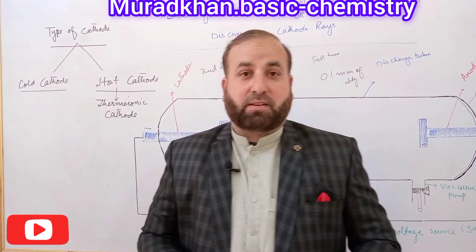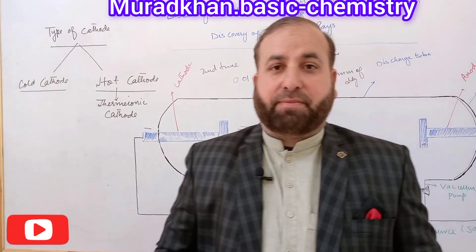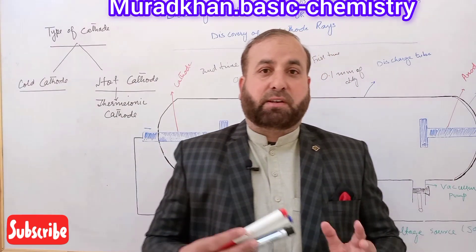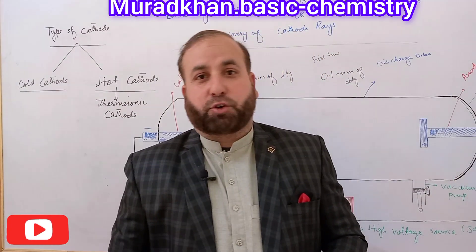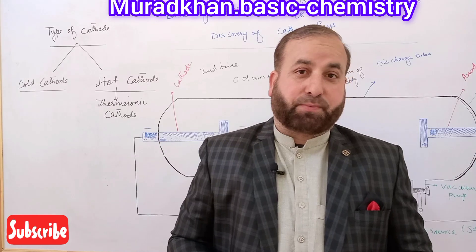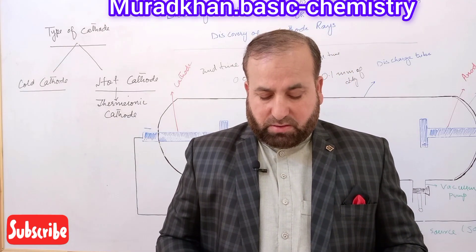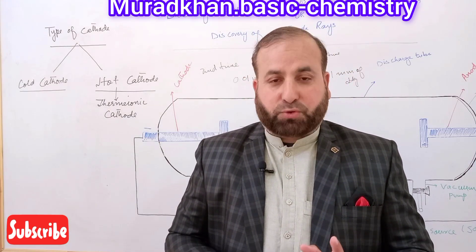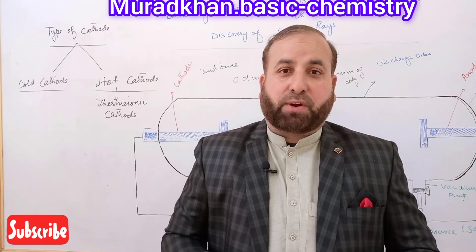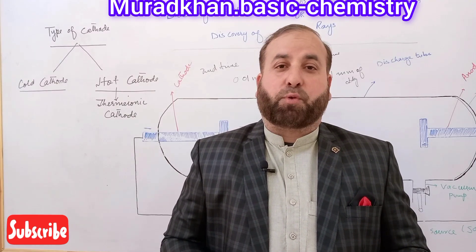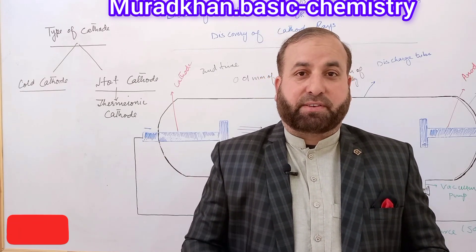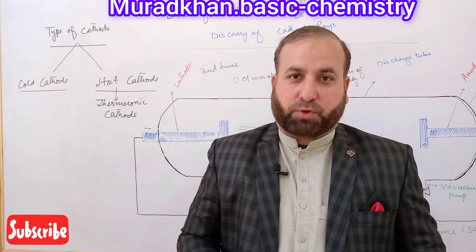In our last lecture, after the discovery of cathode rays and after the experiment of William Crookes, we discussed his conclusion that cathode rays are produced at the surface of the cathode.